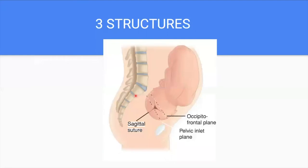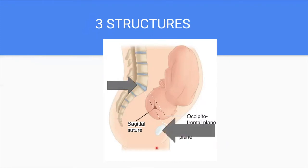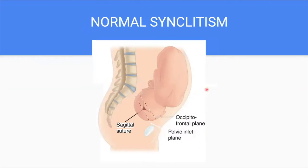To further understand what asyncletism means, we have to be familiar with these three structures in the maternal pelvis and the fetus. First is the sacral promontory, which is posterior in location. Next is the symphysis pubis, which is anterior in position, meaning towards the front. And thirdly would be the sagittal suture of the fetal head. The sacral promontory is posterior, the symphysis pubis is anterior, and the sagittal suture lies between them.